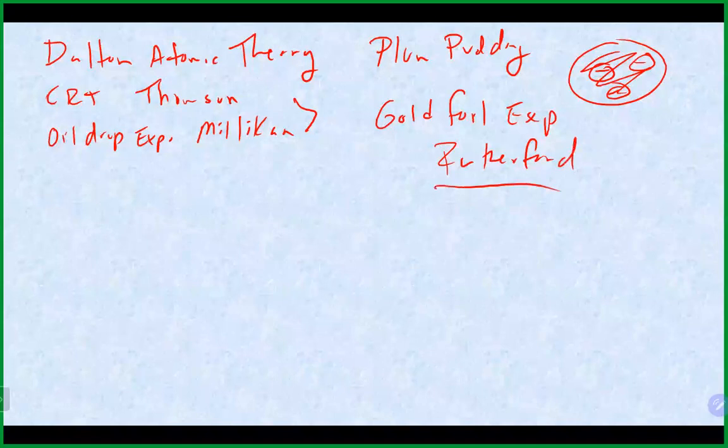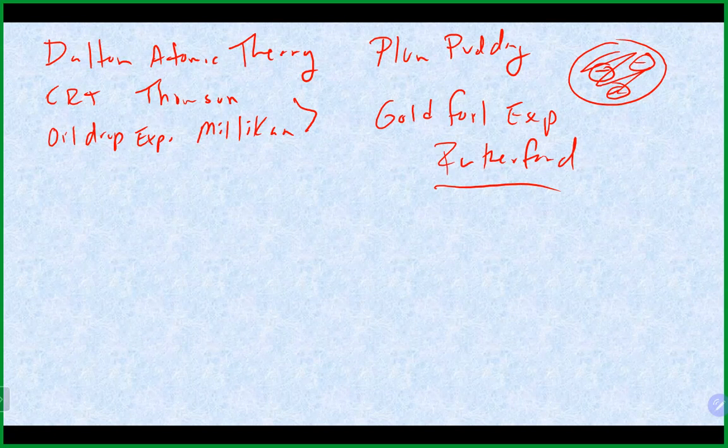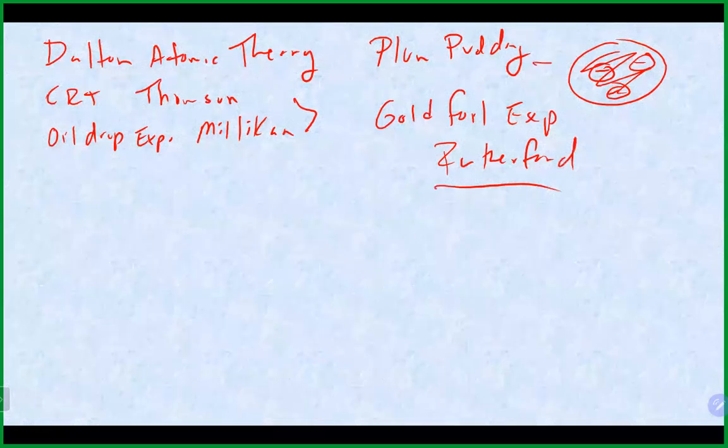Rutherford shot alpha particles at pieces of gold foil and other metals. Based on the plum pudding model, they expected the particles to go through with some deflection, because the alpha particles are heavy and positively charged and would be going through a positive gel. They thought the particles would mostly go through with some deflection.